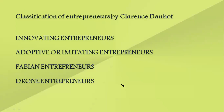Now we move to another very important topic: the classification of entrepreneurs by Clarence Danoff. This is the name of a person, and this classification introduces some new terms. According to Clarence Danoff, there are four types: innovating entrepreneurs, adoptive or imitating entrepreneurs, Fabian entrepreneurs, and drawn entrepreneurs.